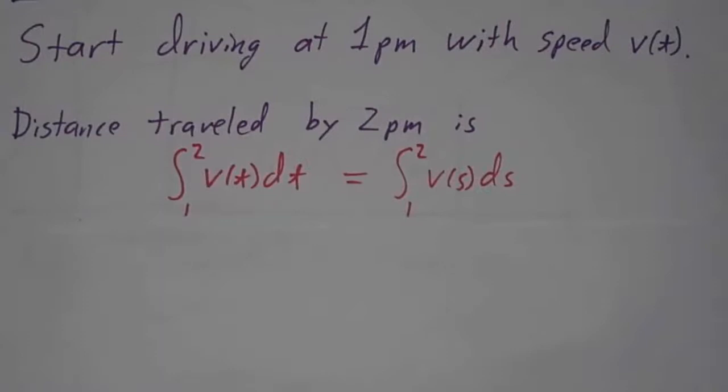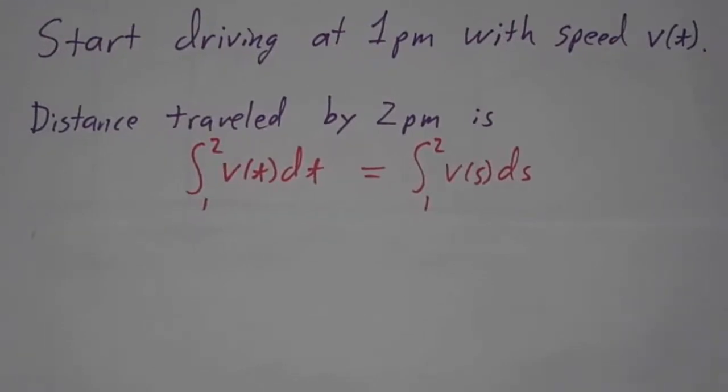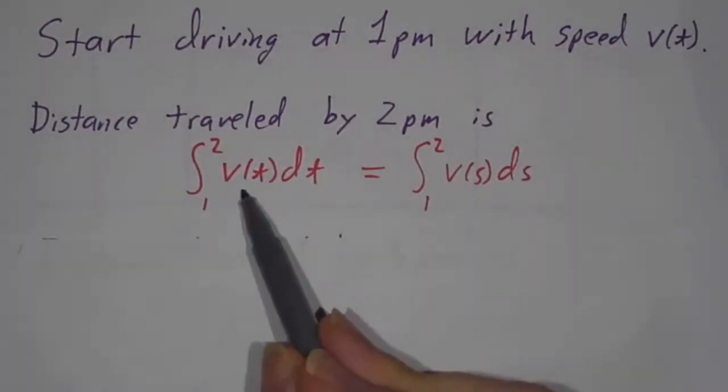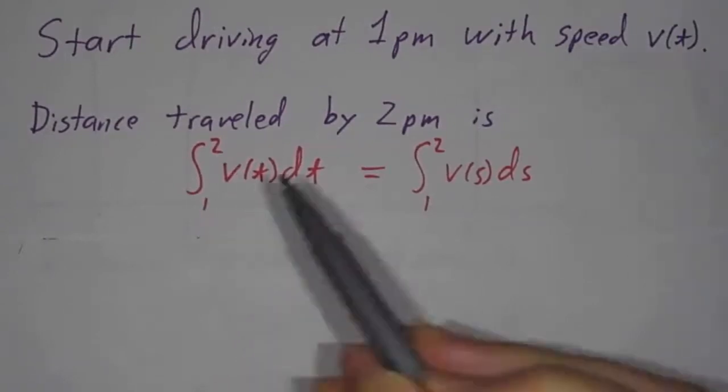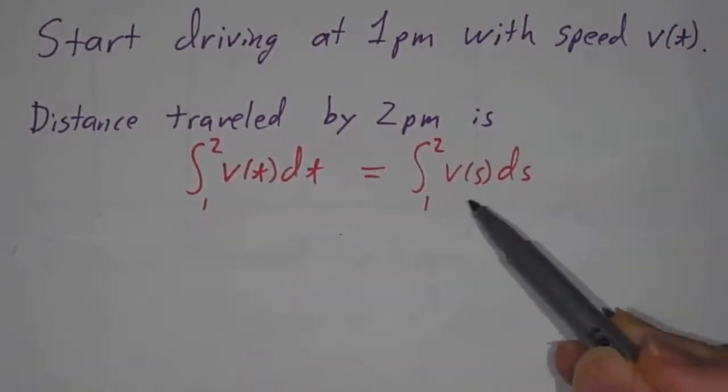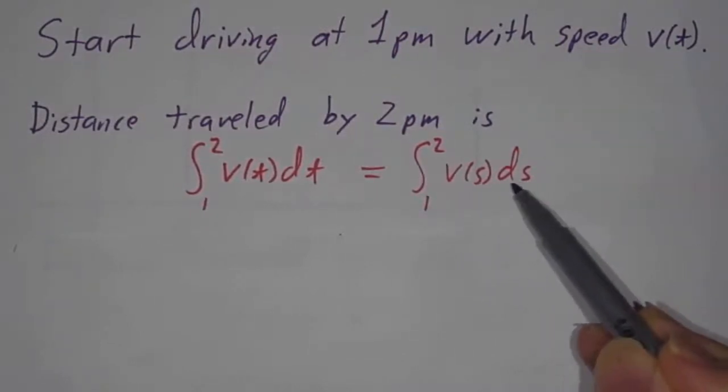If you want to know how far you've traveled by 2 o'clock, that's the integral of your speed with respect to time from 1 to 2. You could also write it as the integral of v(s)ds, or v(q)dq, or v(w)dw.